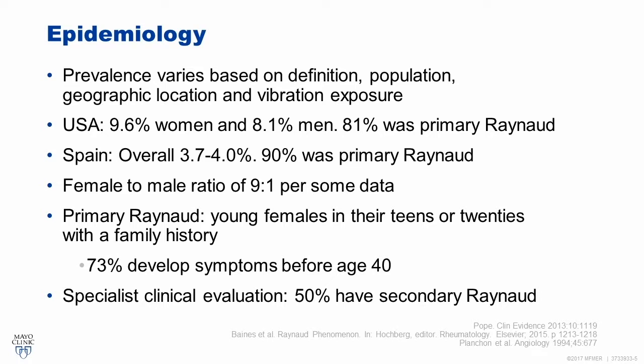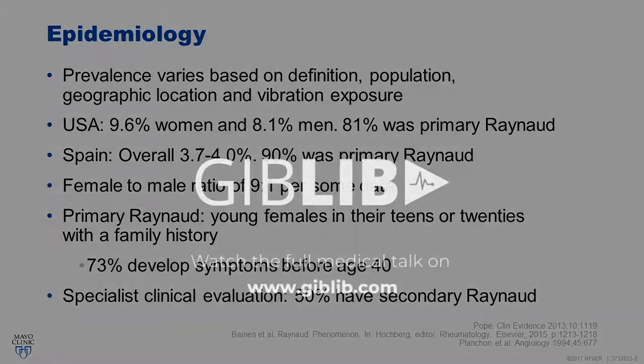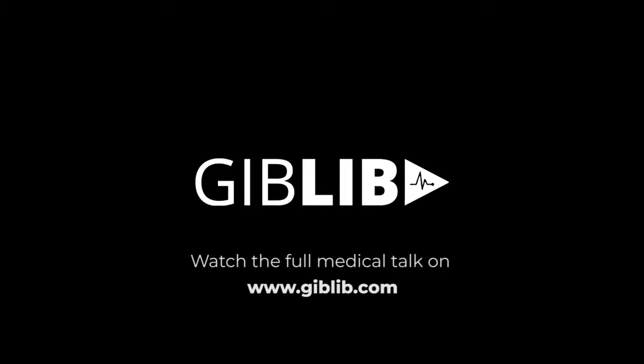Regarding epidemiology, the prevalence varies based on your definition, the population being studied, geographic location with respect to cold exposure, and vibration exposure. Some studies show that in the U.S., prevalence was 9.6% in women and 8.1% in men, which is fairly high. More importantly, 81% was primary Raynaud — so the majority is primary Raynaud. Similarly, in Spain the numbers were slightly lower, but again, a consistent 90% was primary Raynaud. According to other studies and clinical practice, the female-to-male ratio is much higher, at 9 females to every 1 male.